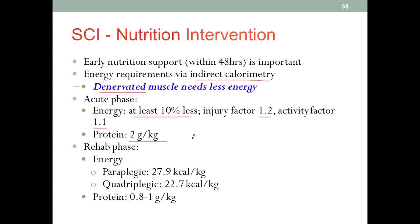Once the patient reaches the chronic rehab phase, energy requirements will decrease significantly because the metabolic stress factor is gone, and those denervated muscles still need less energy. For a paraplegic patient, the current recommendation is 27.9 calories per kilogram — within a relatively normal range. For a quadriplegic patient, it is less than 23 calories per kilogram, which is lower than normal usual intake. We need to consider the decreased energy requirement due to the damage.